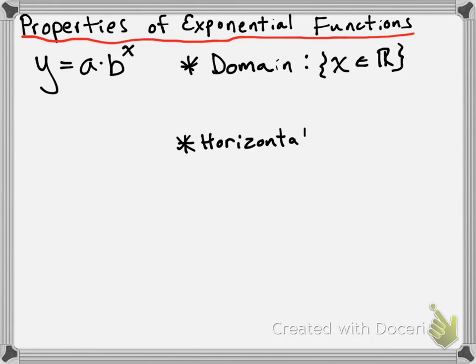Also, the horizontal asymptote is one thing to note. We've looked at multiple different exponential functions and noticed that there's a horizontal line that they tend to approach — they get closer and closer to it but never actually touch. There's always going to be some kind of gap. For any exponential function that hasn't been transformed, they all have the same horizontal asymptote at y equals 0, which is essentially the x-axis.